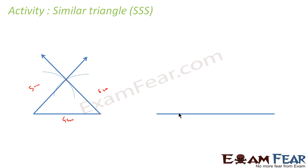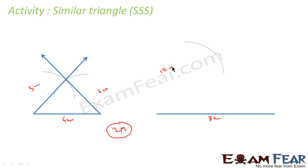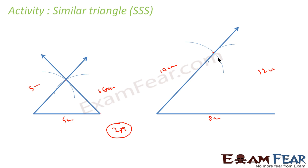Now let's draw another line. Let's suppose this is 4, so make it 8cm — twice of this, so a factor of 2x. This was 5cm, so I will draw an arc of 10cm from here. This was 6cm, so I will draw an arc of 12cm from here. I got this point and I draw the second triangle.